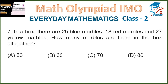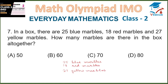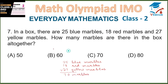Everyday Mathematics. Question 7: In a box there are 25 blue marbles, 18 red marbles and 27 yellow marbles. How many marbles are there in the box altogether? Altogether means we have to add them: 25 plus 18 plus 27 equals 70 marbles. So section C is the correct answer.